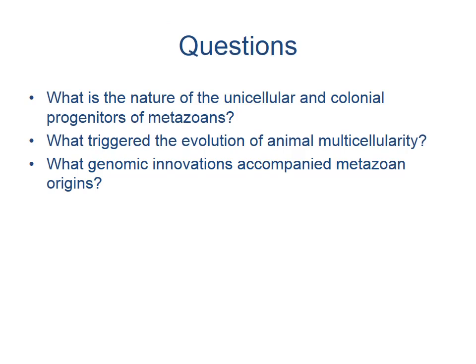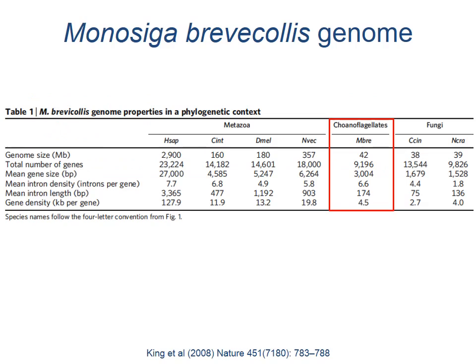There are many interesting questions we can ask with choanoflagellates. First, what is the nature of the unicellular and colonial progenitors of metazoans, or animals? We can also ask what triggered the evolution of animal multicellularity, and finally we can explore the genomic innovations that accompanied metazoan origins.